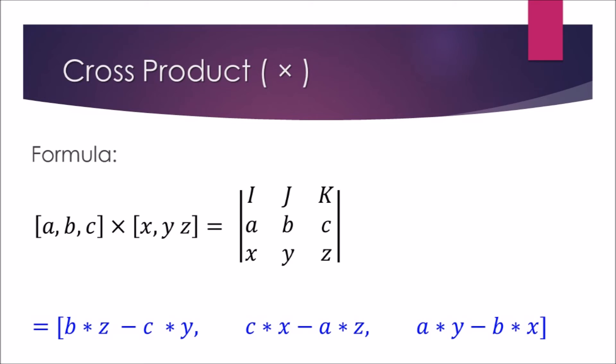The explicit formula is: the first element has b*z - c*y, the second element has c*x - a*z, and for the third element, a*y - b*x. Note how the formula flows from the determinant form of the cross product.